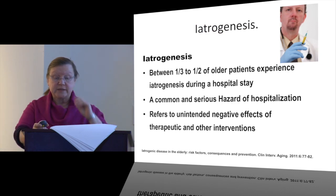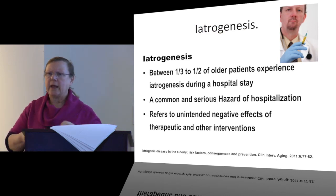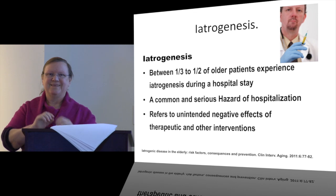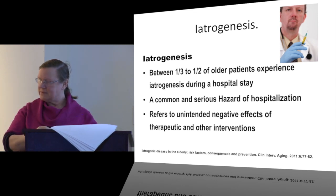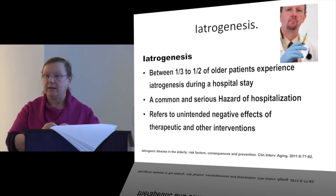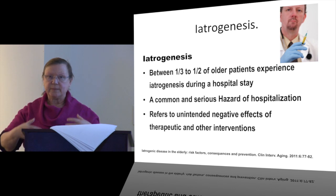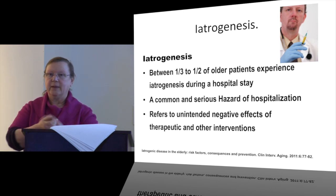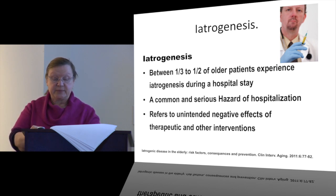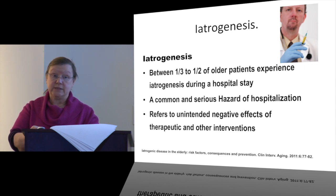The next item is iatrogenesis. The word comes from the Greek word 'iatro,' meaning healer — it refers to unintended adverse outcomes brought on by the healer, meaning through our treatments we actually promote things we didn't intend but which have adverse outcomes. The literature shows that about 36 to 58 percent of older adults suffer from some form of iatrogenic disease during hospitalization. Basically, about one-third to half of all patients experience some harm during their hospital stay.